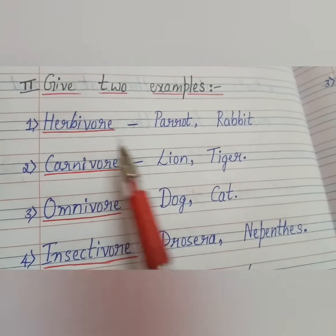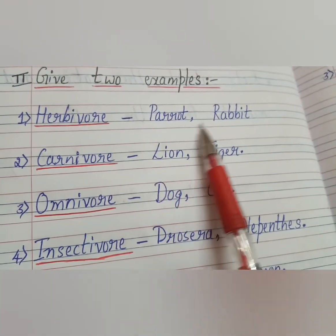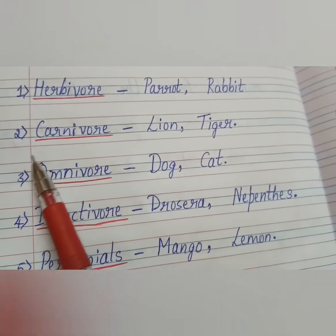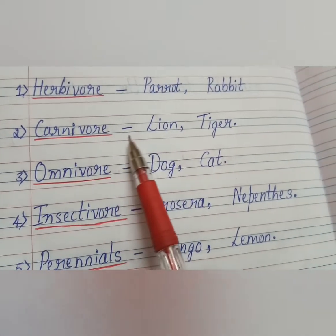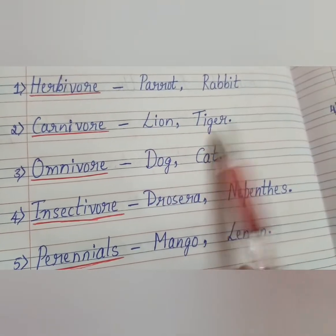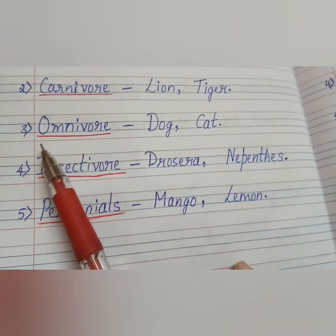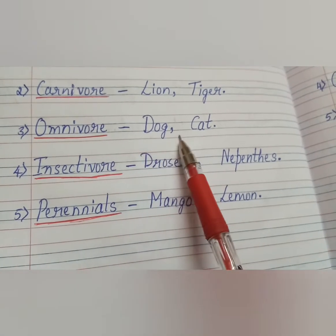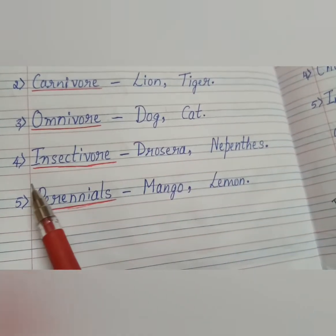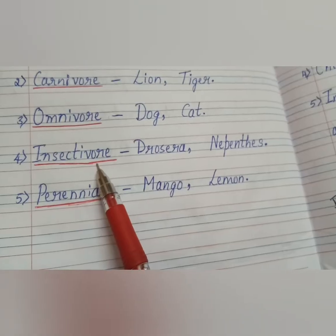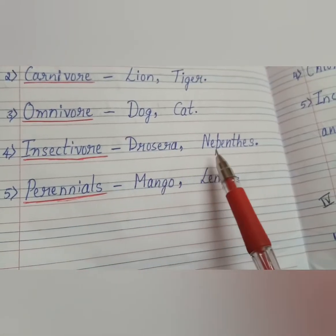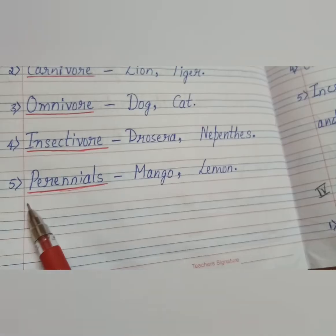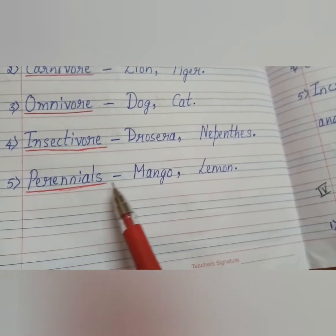First: herbivore examples are parrot and rabbit. Second: carnivore examples are lion and tiger. Third: omnivore examples are dog and cat. Fourth: insectivore examples are Drosera and Nepenthes. Fifth: perennials examples are mango and lemon.